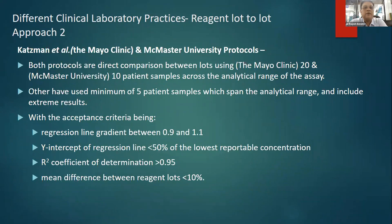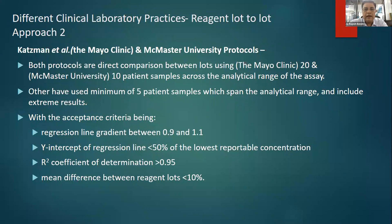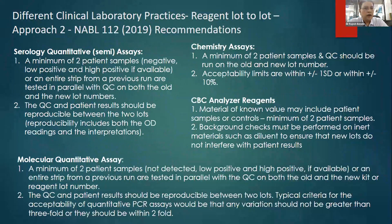Regarding the Taxman et al. paper from Mayo Clinic and another from McMaster University, they have given their own protocols as alternatives to EP26A. Mayo Clinic recommends using 20 samples while McMaster University uses 10 samples. Other publications talk about using as few as five patient samples. What is common across all of them is that whether it is 20, 10, or 5 samples, the choice must be across the analytical measuring range — low, mid, and high patient samples — and linear regression analysis is used, with R-squared greater than 0.95 or mean difference between reagent lots less than 10 percent.